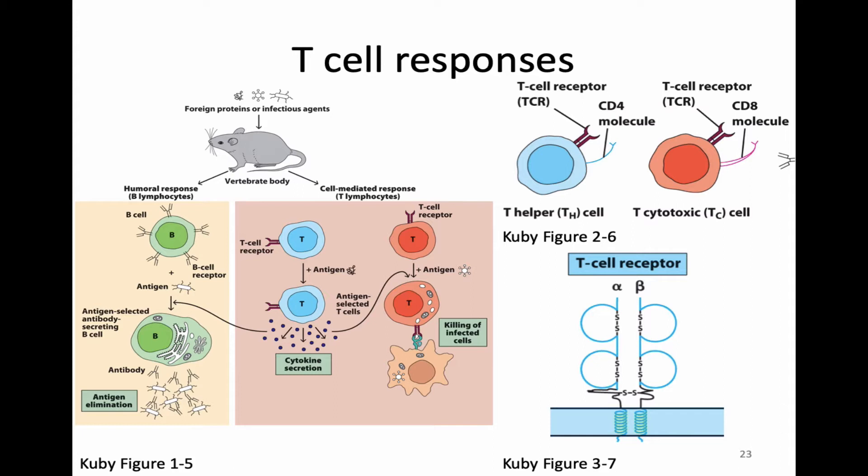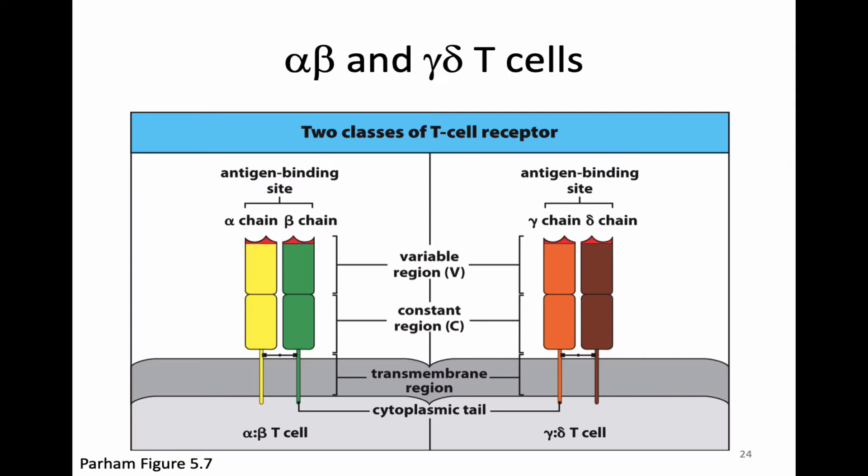Now that we've thought about the T cell receptor a little bit, we can begin to think more about T cell responses and aspects of T cell biology. Unfortunately, there is one detail in all of this that I have left out. The T cell receptor described so far — with an alpha chain and a beta chain — represents a rather classic type of T cell. However, it turns out that there are some other types of T cells that do things a little differently. We can classify T cells into either alpha-beta T cells or gamma-delta T cells.